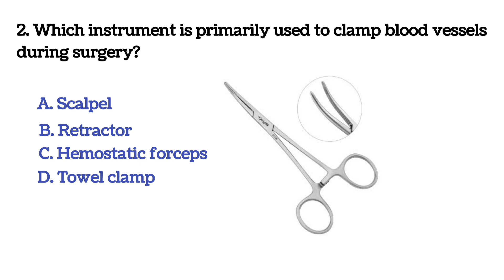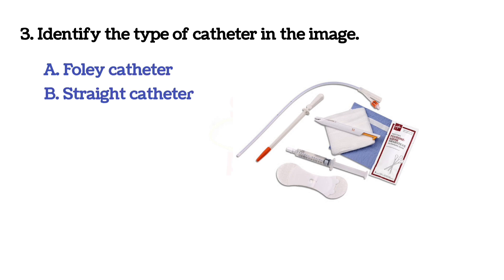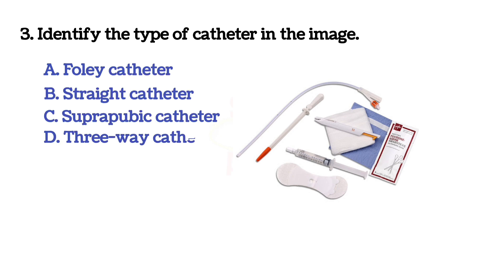Next question: which instrument is primarily used to clamp blood vessels during surgery? Option A: scalpel. Option B: retractor. Option C: hemostatic forceps. Option D: towel clamp. The answer is C, hemostatic forceps.